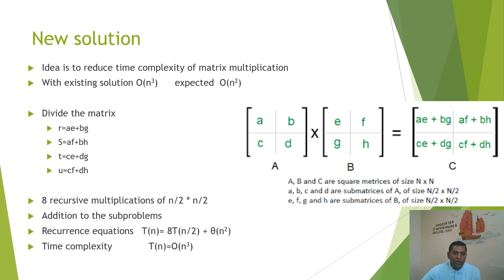Once we get the recursive multiplications, we have to add their results — 4 additions are needed. If we write a recurrence equation for this multiplication, it is T(N) = 8T(N/2) + Θ(N²). Here, 8 represents the 8 recursive multiplicative subproblems, N/2 is the size of each subproblem, and Θ(N²) is the time required for the addition of the respective recursive multiplications.